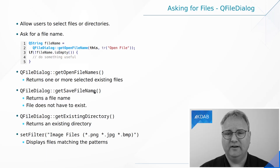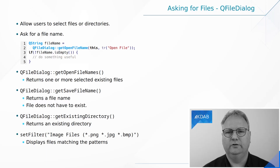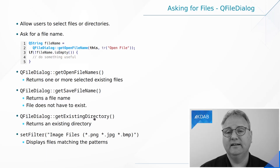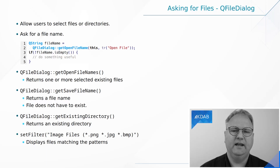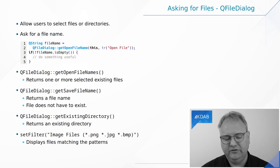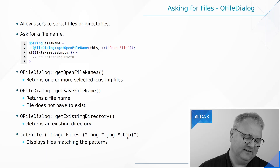We also have getSaveFileName, which is for when you need to save something. In contrast to getOpenFileName, it allows you to specify a file that doesn't exist already — which is what you want most of the time when saving. And finally, getExistingDirectory for getting a directory. All of these methods take a number of parameters, so look up the API. One of the things they take is a file pattern where you can specify, for example, only JPEG and PNG files.